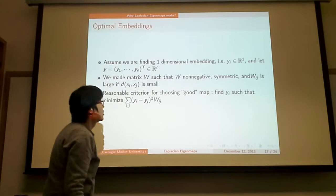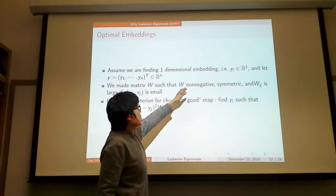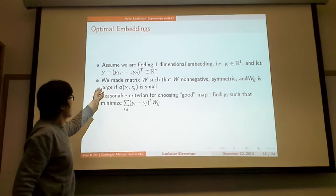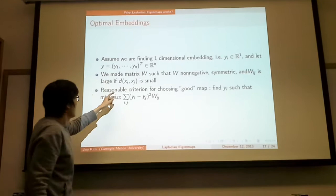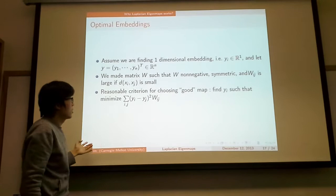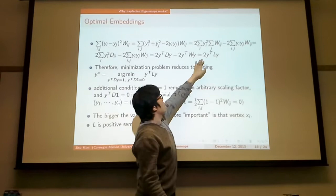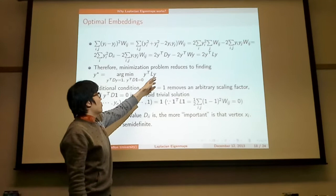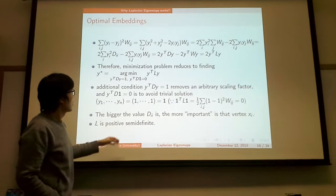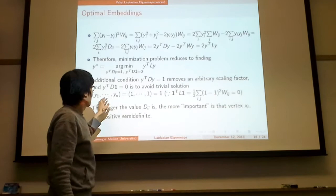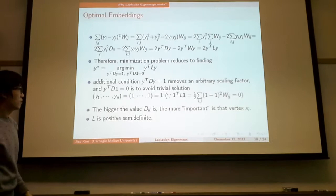Why use Laplacian eigenvectors? Assume we are finding a one-dimensional embedding, so yi is in R1. Then y is the vector y1 to yn. We make matrix W such that W is non-negative symmetric and wij is large if the distance is small. The objective criterion would be to find yi that minimizes this term. Actually, what you can show is that this term is the same as this one. So it is equivalent to finding the minimizer of y transpose Ly. I put additional two conditions here. Y transpose Dy equals 1 removes an arbitrary scaling factor. And y transpose D1 equals 0 is to avoid the trivial solution, the trivial solution being every point mapping to one.